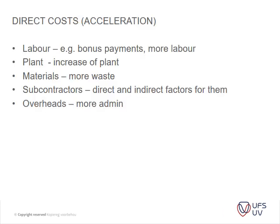Looking at direct costs — these include labor (for example bonuses, more labor needed if you accelerate), plant (you need to increase your plant), materials (more waste is produced), and subcontractors. These are the direct and indirect factors contributing to your costs.